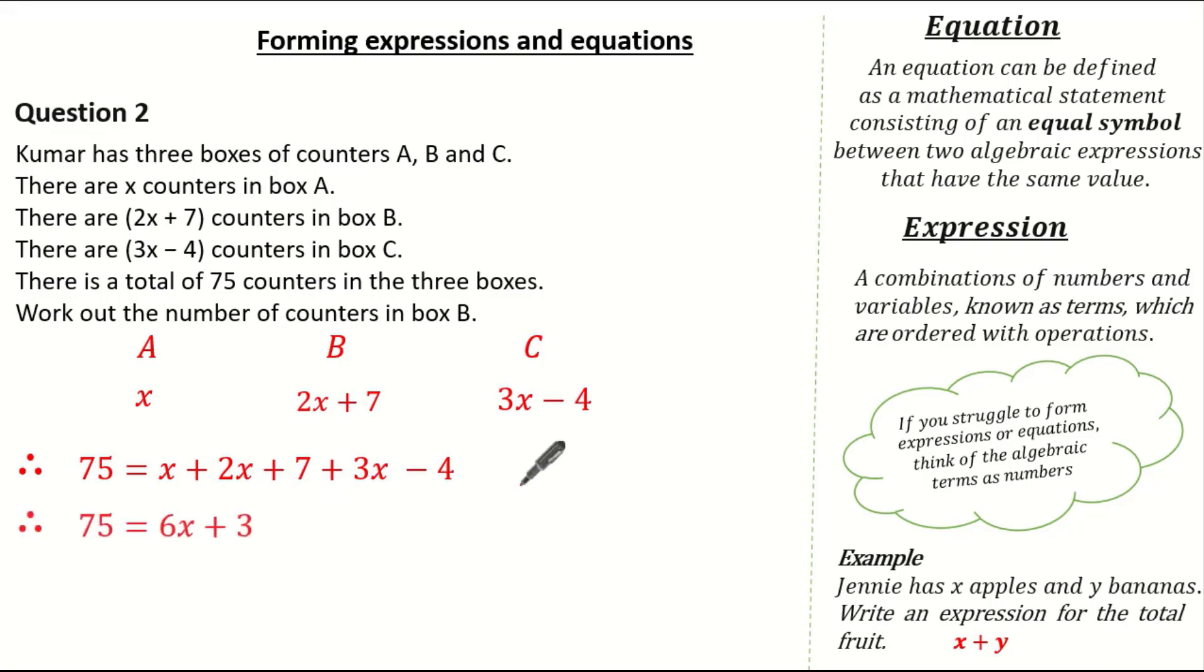Now collecting all our like terms means I have 75 is equal to 6x add 3. Now subtracting 3 from both sides gives me 72 is equal to 6x. So dividing both sides by 6 tells me that x is equal to 12. So now I know x is equal to 12, I can work out the number of counters in box B. Well the expression for box B is 2x plus 7. And I know x is 12, so substituting this in means I have 31 counters in box B.